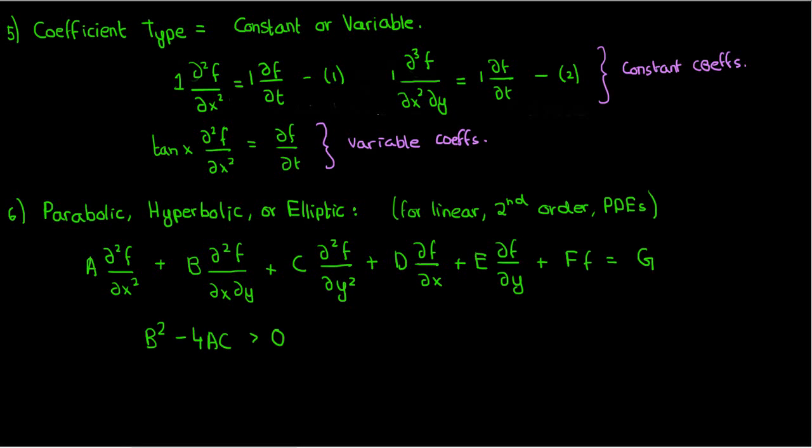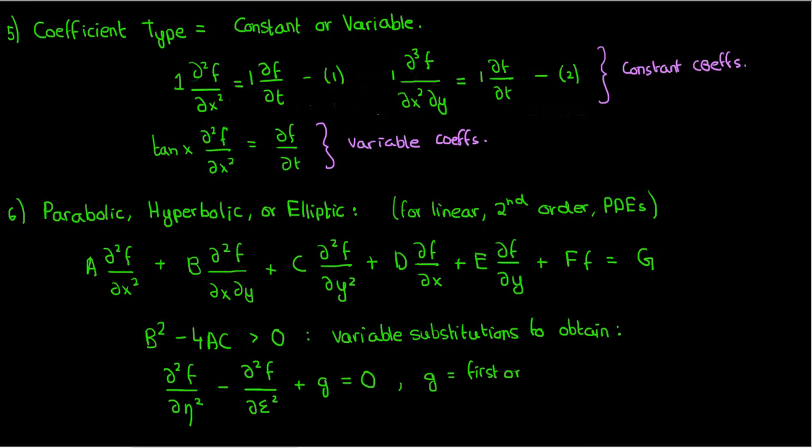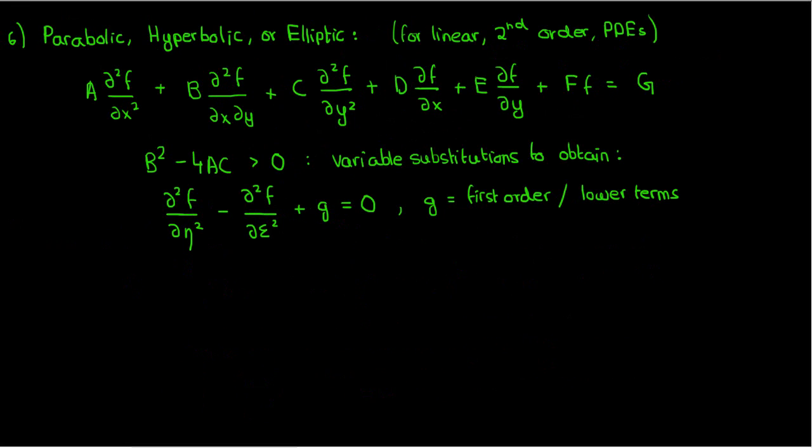These coefficients A to G are generally functions of x and y. A PDE of this form is hyperbolic if B² - 4AC is greater than 0. The reason we say that such a PDE is hyperbolic is that if this relation holds, we can use a bunch of variable substitutions to change x and y to η and ξ respectively, and then reduce the PDE to d²f/dη² minus d²f/dξ² plus g equals 0, where g just denotes the first-order terms and everything else. This is very similar to the equation of a hyperbola in a conic section, which is why such a PDE is called hyperbolic.